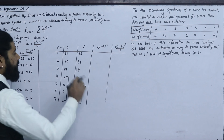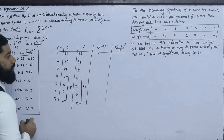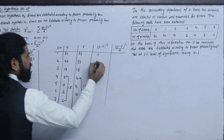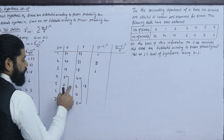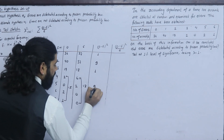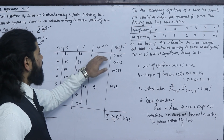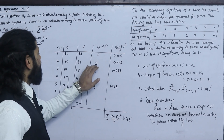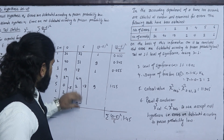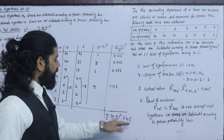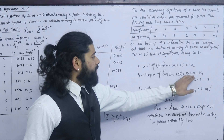Now we calculate O minus E squared divided by E for each class. 36 minus 37 equals minus 1, squared is 1, divided by 37 equals 0.027. 40 minus 37 equals 3, squared is 9, divided by 37 equals 0.243. 19 minus 18 equals 1, squared is 1, divided by 18 equals 0.055. For pooled tail: 5 minus 8 equals minus 3, squared is 9, divided by 8 equals 1.125. The summation is approximately 1.45. The level of significance is 1%.